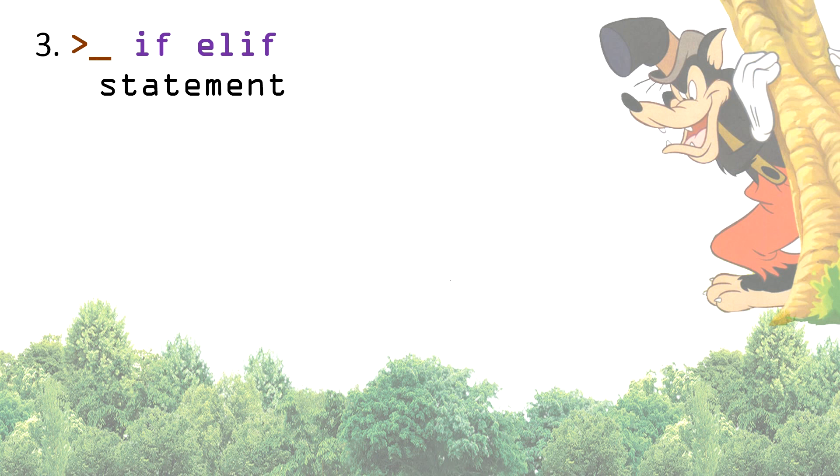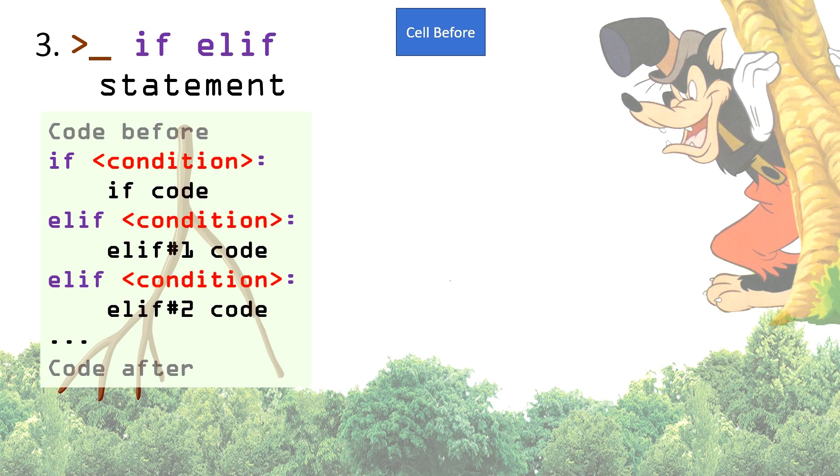Next is type number three of the if statements: the if-elif statement. In a real-life example, it looks more like this big tree branch. The biggest thick on the right represents the if true condition execution, and the smaller twigs are the if-elif code, and I will show you in seconds. If-elif statements are used in the case of multiple scenarios. As before, there are code cells before and also code cells after.